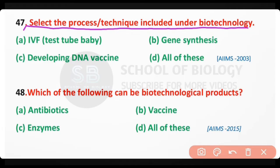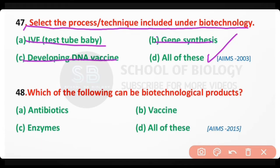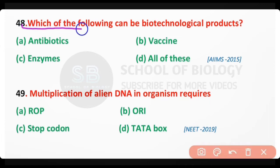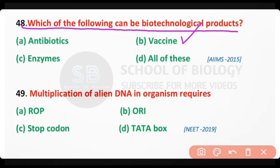The correct answer is option D — gene synthesis, as well as developing DNA vaccines, and IVF test tube baby are all different techniques of biotechnology. Question number 48: Which of the following can be a biotechnology product — antibiotics, vaccine, enzymes, or all of these? The correct answer is option B — vaccine is a biotechnology product.